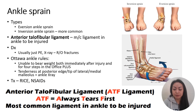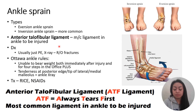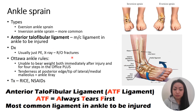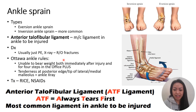Diagnosis is usually by physical examination: swelling and pain on palpation of the lateral aspect for inversion sprains, or medial aspect for eversion sprains. X-rays can be done to rule out fractures. The Ottawa ankle rules determine if an X-ray is needed: if the patient is unable to bear weight immediately after injury and take four steps in the office, plus there is tenderness at the posterior edge or tip of the lateral or medial malleolus, an ankle X-ray is required.